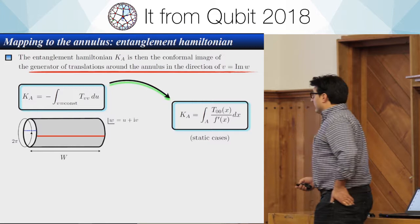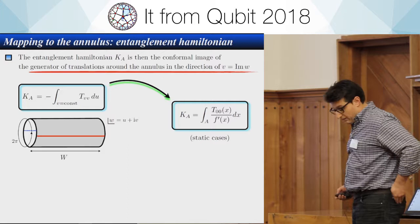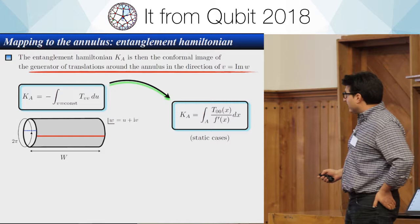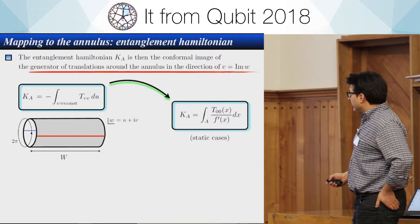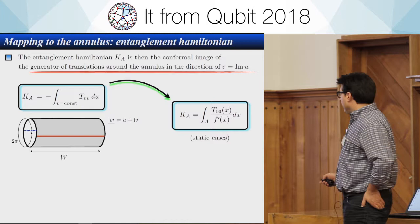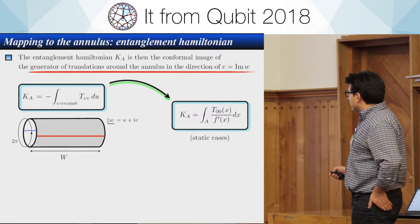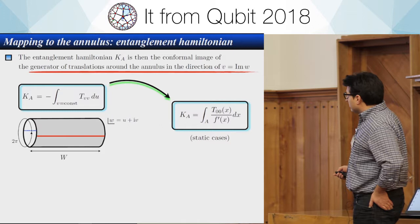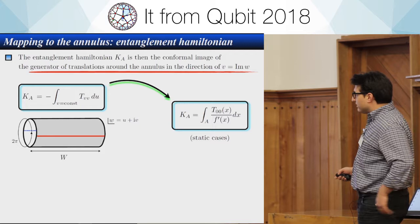This construction also allows you to write the entanglement Hamiltonian. If you consider the generator of translations around the annulus direction and map it back to the z-plane using the conformal map f, you find that the entanglement Hamiltonian can be written in a generic form. This is a general expression for all static cases that can be classified using this conformal map.